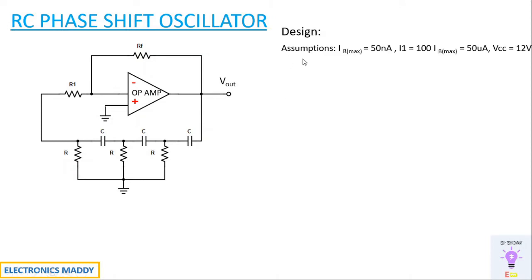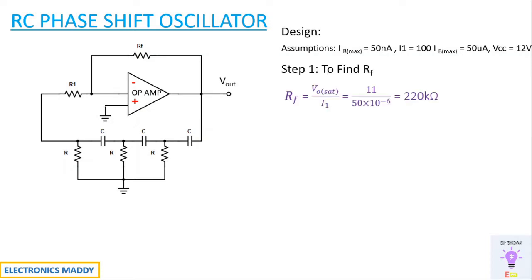We are assuming IVMAX to be equal to 50 nanoA and I1 to be equal to 100 times IVMAX, that is 50 microA, and VCC is 12V. We need to find the value of Rf, and Rf value is given by Vout_sat divided by I1. Substituting this value, Vout_sat is given by VCC minus 1, that is 12 minus 1 = 11, giving 220 kilo ohm.